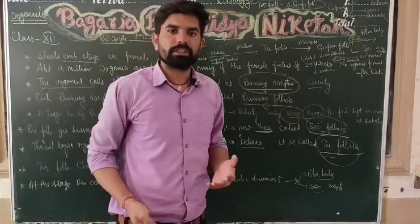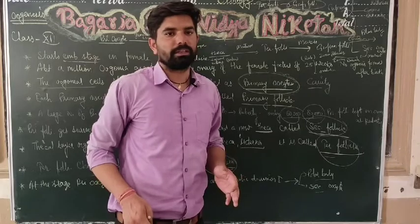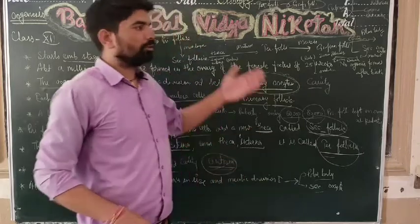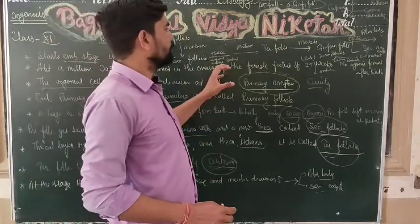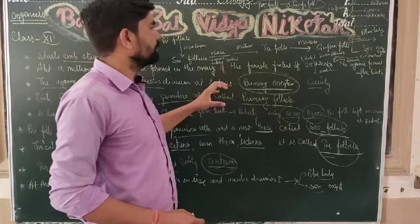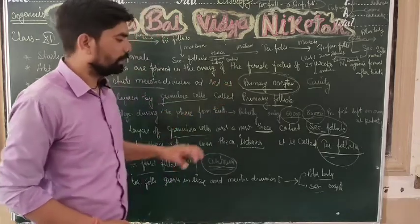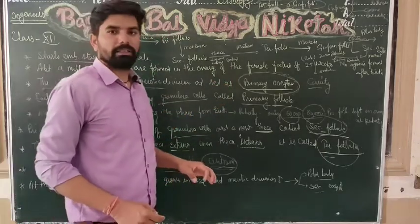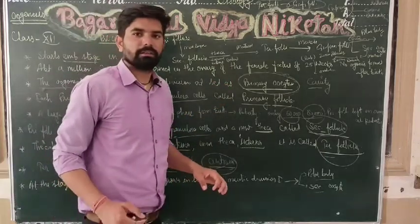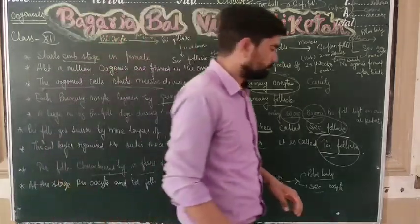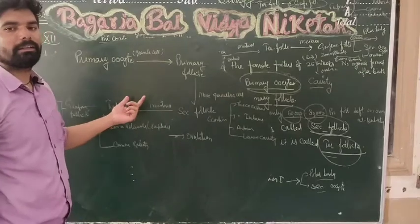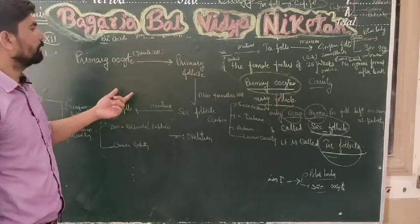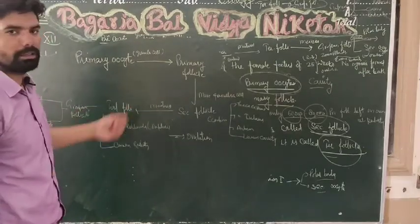This process is called ovulation. We have now studied oogenesis. Let us also look at the diagrammatic representation of oogenesis.